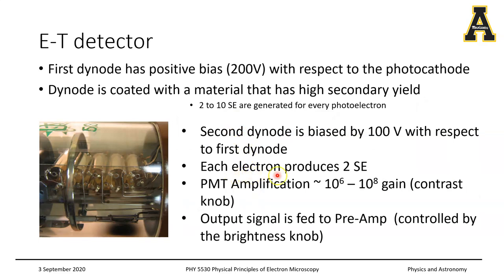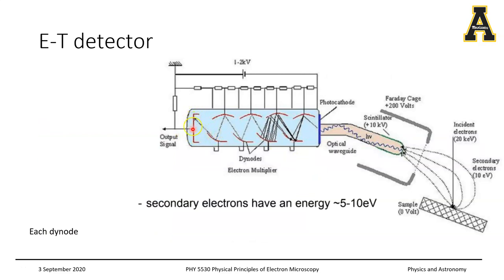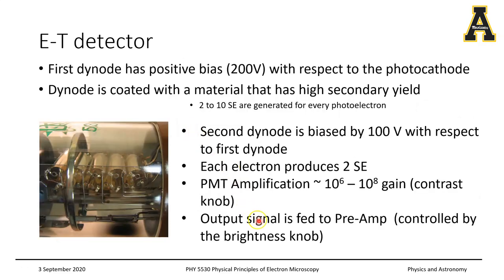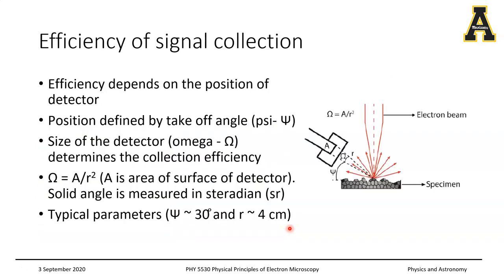For each electron, about two secondary electrons are generated, and over eight successive dynodes you can reach an amplification on the order of 10^6 to 10^8. As a user on the electron microscope, you can control the amplification using the contrast knob. Once all the electron multiplication is done, the signal reaches the collector pre-amplifier, which is controlled by the brightness knob — giving you control over the brightness of the recorded image.